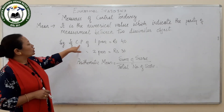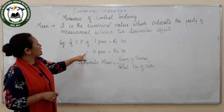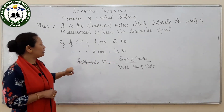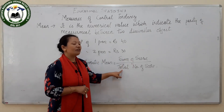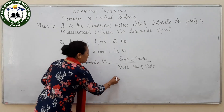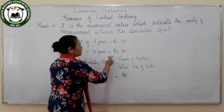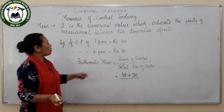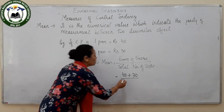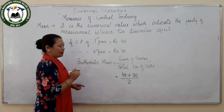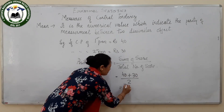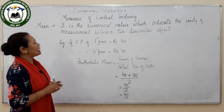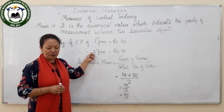To explain in detail, for example, the cost price of one pen is Rs.40 and the cost price of the second pen is Rs.30. Arithmetic mean is just like taking out the average. The formula for arithmetic mean is: sum of the scores divided by the total number of scores. So 40 plus 30 equals 70, divided by 2, gives you 35. So 35 is the average price of the 2 pens.